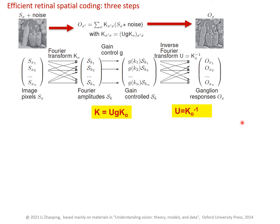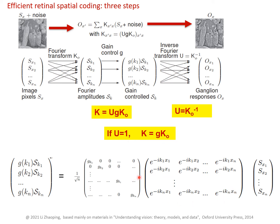Remember that we learned this U transform could take infinitely many choices as long as it's unitary. So let's see what happens if we don't take the inverse Fourier transform but make it just an identity matrix — meaning the last stage does nothing. In that case, K will just be the decorrelation and gain control, taking the original image into output form as Fourier components amplified or scaled by their individual gain factor.